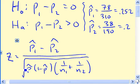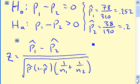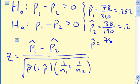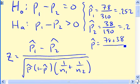And then the other thing we're going to need, if we look down here at the test statistic, this is P hat, the pooled proportion. So, P hat is what we get if we combine the two together. So, 78 plus 38 divided by 310 plus 190. And so, if we do that calculation, it turns out to be 0.232.